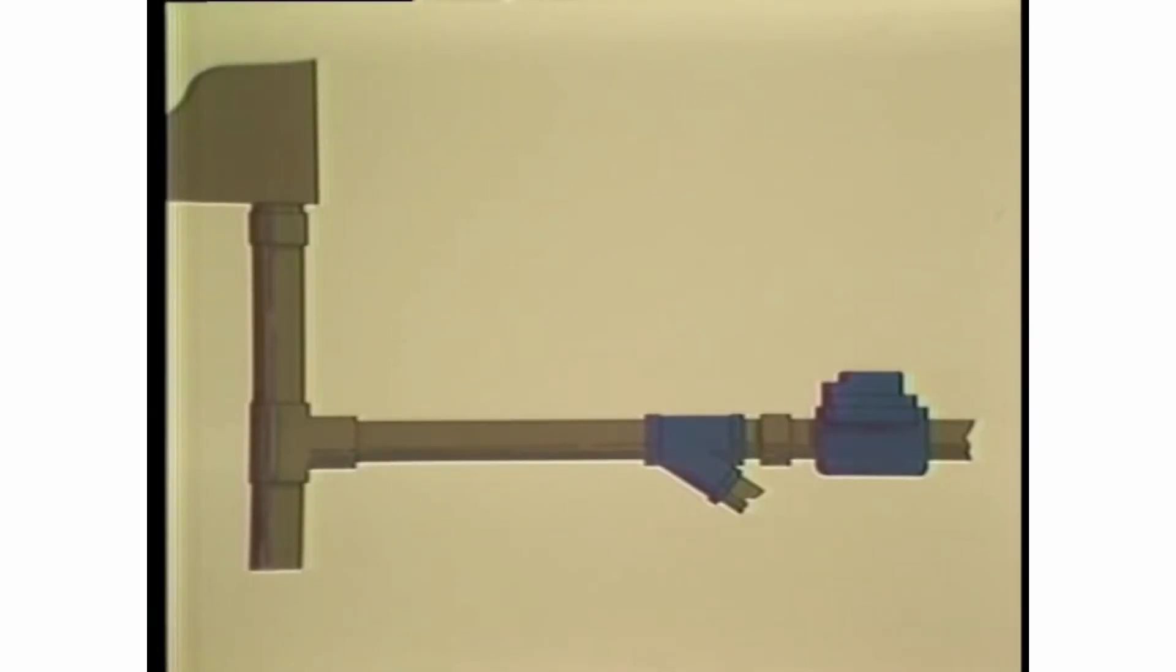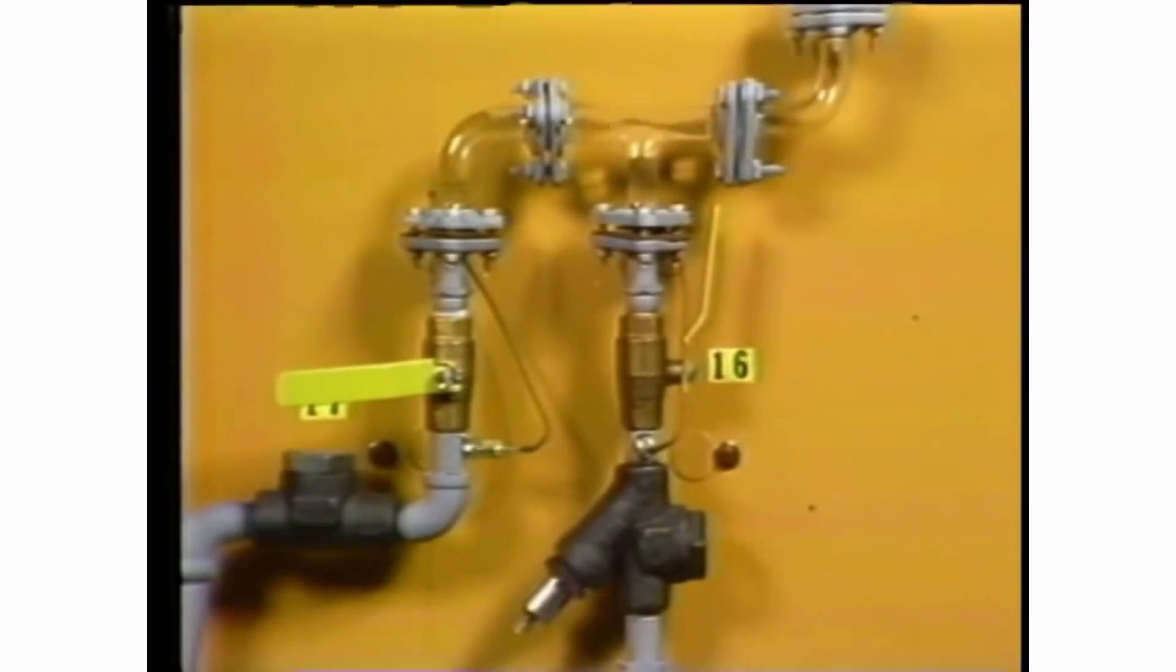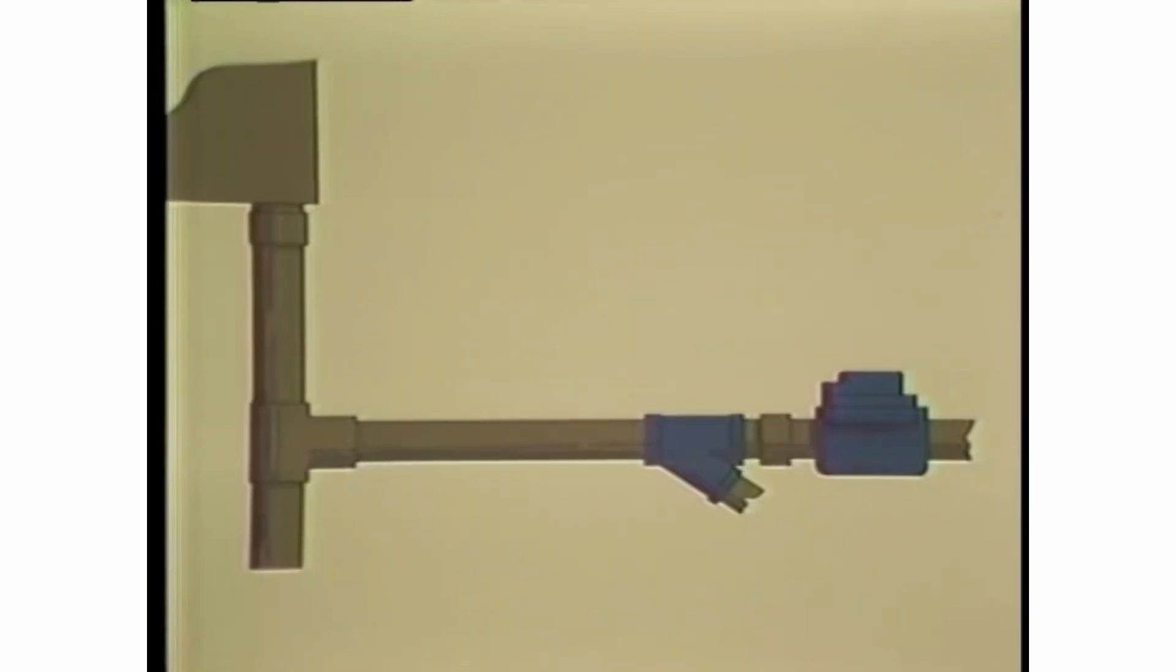Thermostatic and thermodynamic traps should have a longer drip or cooling leg, placing the trap further from the equipment than is recommended for mechanical traps. The reason for this is that thermostatic and thermodynamic traps back up condensate each time the valve closes. Thus, a longer horizontal or vertical drip leg is needed to prevent condensate from backing up into the heat exchanger.